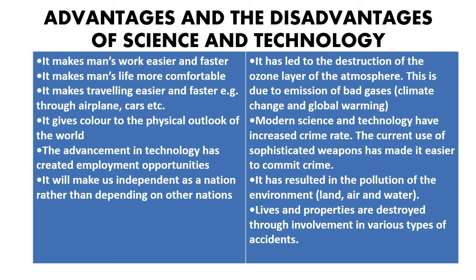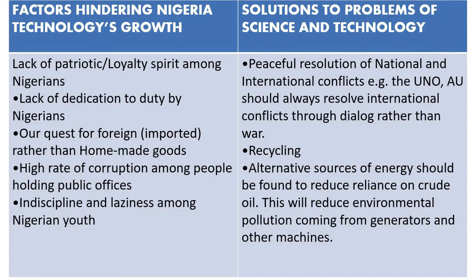What are the disadvantages of science and technology? It has led to the destruction of the ozone layer of the atmosphere — that is, climate change and global warming. Modern science and technology has increased crime rates; the use of sophisticated weapons has made it easier to commit crime. It has resulted in the pollution of the environment — our lands, air, and water are being polluted. Animals in the water are now dying as a result of chemicals and waste products from factories. Lives and properties are destroyed through various types of accidents.